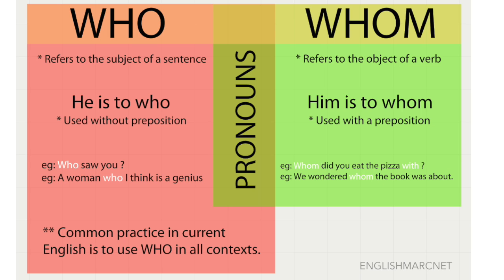I wrote two sentences as memory aids: 'he' is to 'who', and 'him' is to 'whom'. Below that, in the red box, who is used without a preposition, and in the green box, whom is used with a preposition.